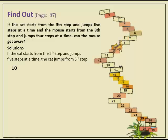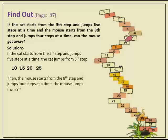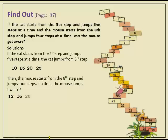From 10 the cat goes to 15, then 20, then 25. The mouse starts from the 8th step and jumps 4 steps at a time: from 8 it lands on 12, then 16, then 20, then 24.